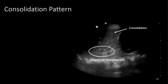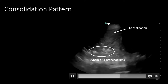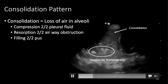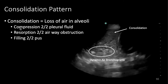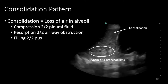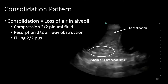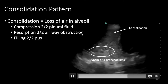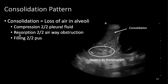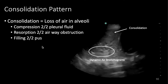When you see a hepatized lung, there's a differential to consider. Consolidation means loss of air in the alveoli — the lung behaves like a solid organ. The three mechanisms are: compression due to pleural fluid, which squishes the air out; reabsorption due to airway obstruction, such as a right main stem intubation or mucus plug causing the lung to deflate; and most commonly, filling of the alveoli due to purulent material.